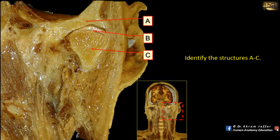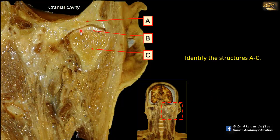Identify the structures A to C. This is a coronal section of the side of the head, as you can see here on the inset. Here is the cranial cavity, and this is just below the cranial cavity in this region. This is the region of the temporomandibular joint.